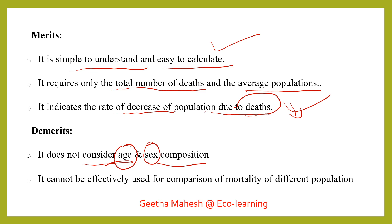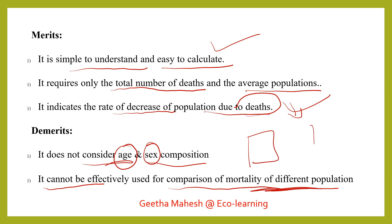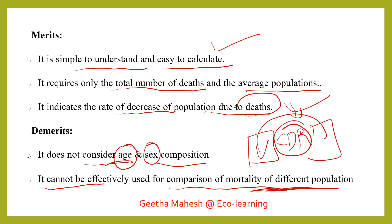Another demerit is that it cannot be effectively used for comparison of mortality of different populations. When comparing two groups, the crude death rate alone does not tell us where the deaths are occurring or which group is healthier.